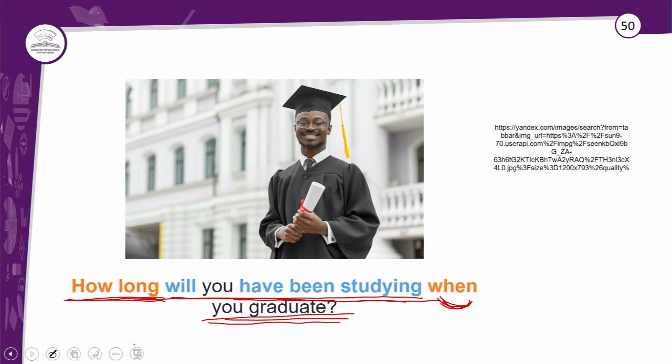Entenderam essa questão? 'Will have been studying' é a nossa estrutura de futuro perfeito contínuo, mais a expressão de tempo 'for two hours'. E aí transformou a nossa frase. And that's it! Temos as nossas referências. Eu espero que vocês tenham aprendido bastante os nossos tempos verbais nessa jornada que começou lá na Unit 1 e terminou aqui na Unit 2. See you next class! Bye bye!